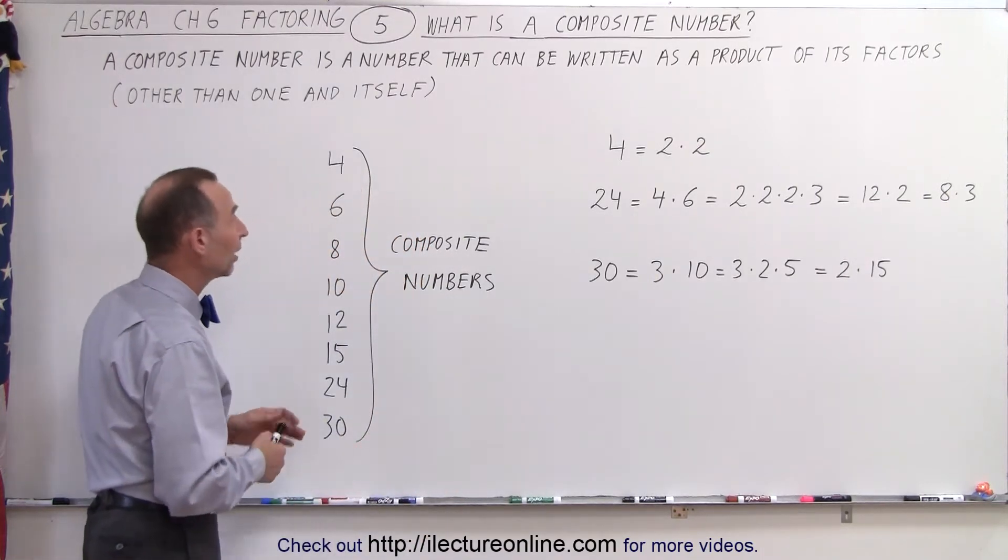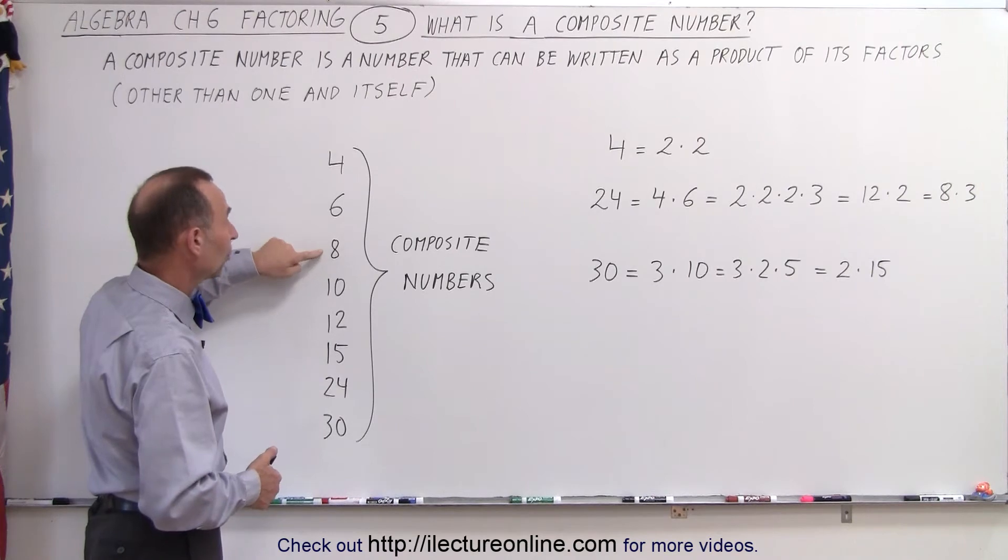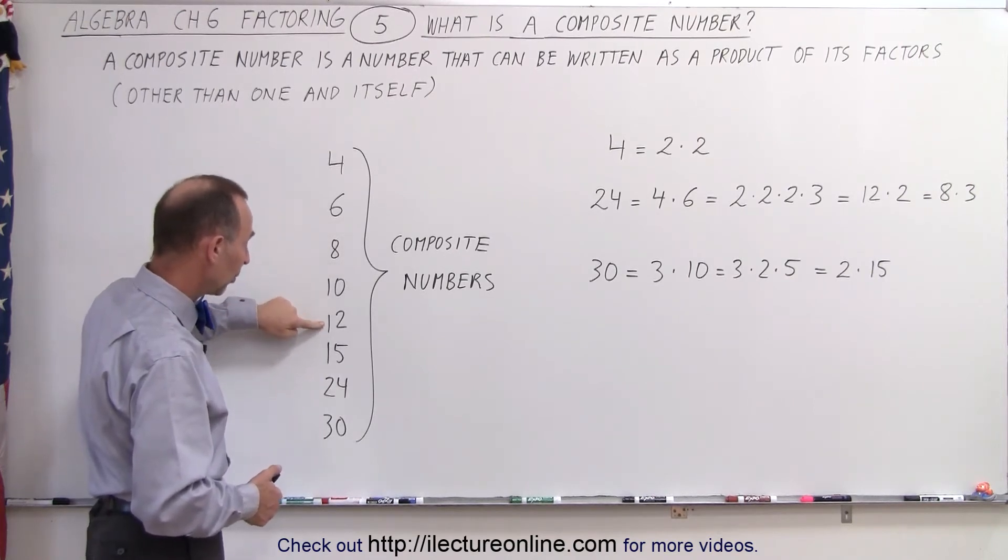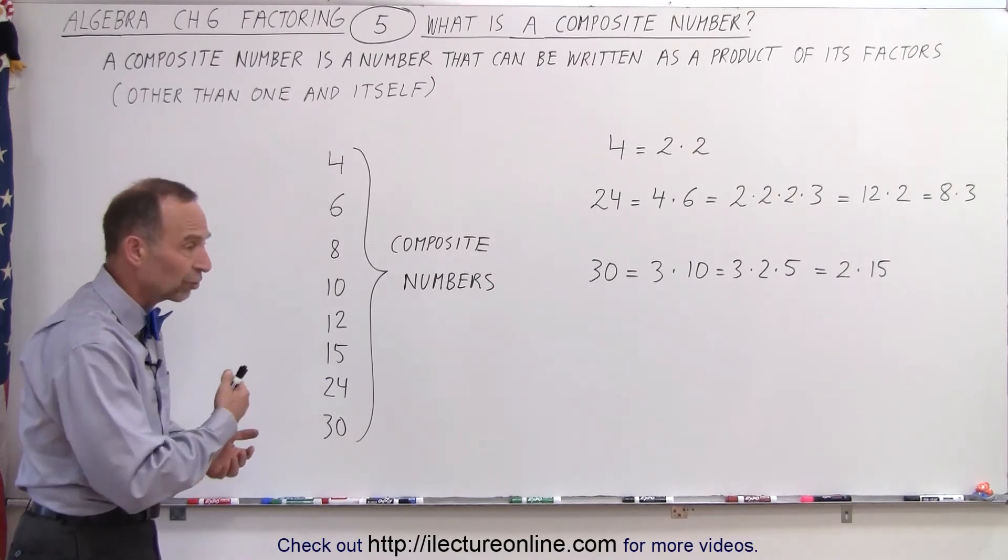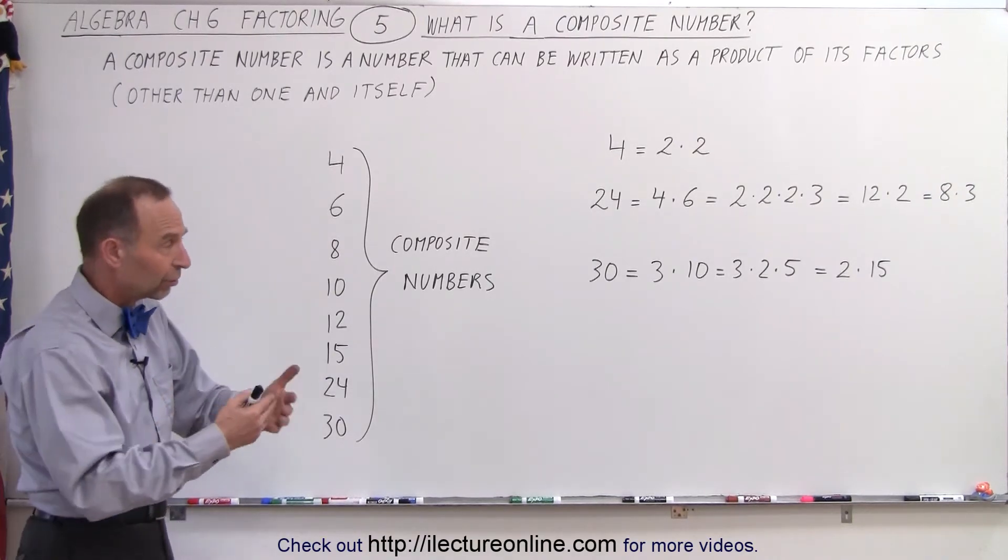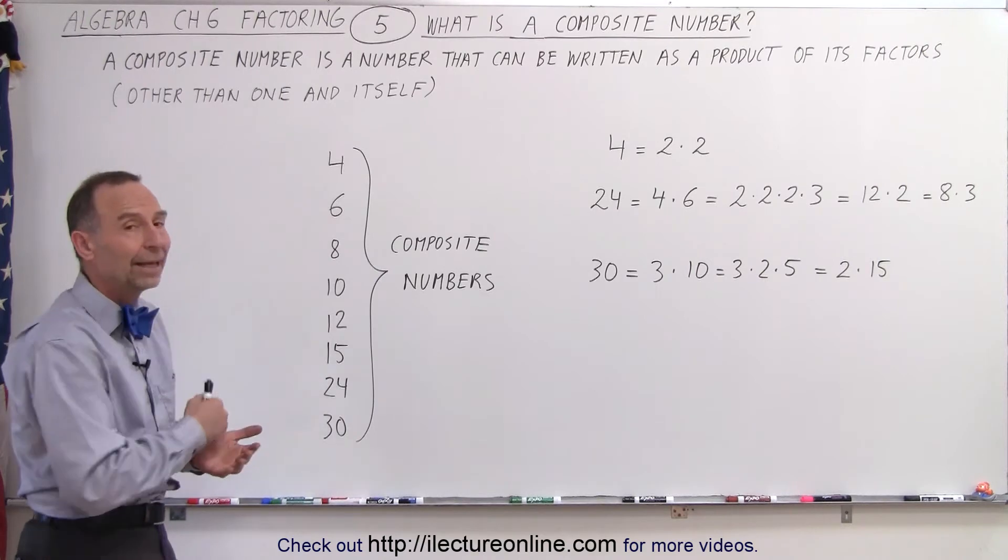And we can also realize that 6 is a composite number, so is 8, so is 10, so is 12, so is 15, because all of those numbers can be written as factors, or as products of factors that are not one and themselves.